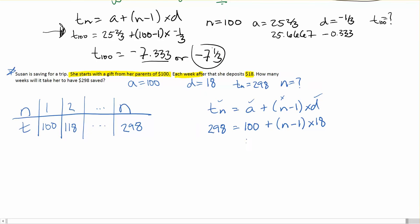So here we're saying that N is equal to 12. So in the 12th week, she will have $298.